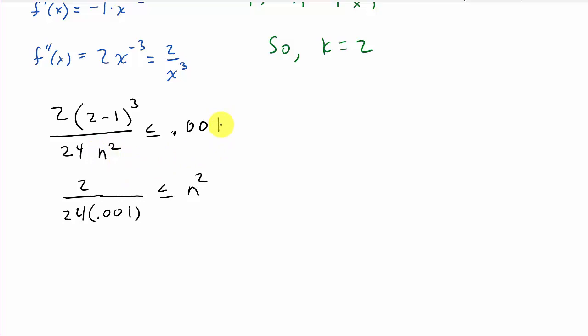So, now, what we have is we have 1 over 12 times 0.001 is less than or equal to n squared, and so I get n is greater than or equal to the square root of 1 over 12 times 0.001.